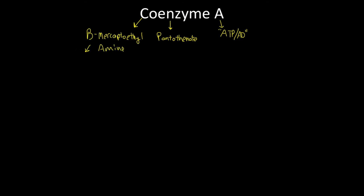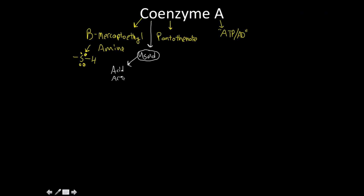The only really important part about this is that there is a cysteine residue. Really just the coenzyme A itself — I'm going to switch colors to really talk about what it's useful for — is that it's used for acid activation. Any carboxylic type of acid inside our cells, if we want to activate it, we're going to be using coenzyme A.